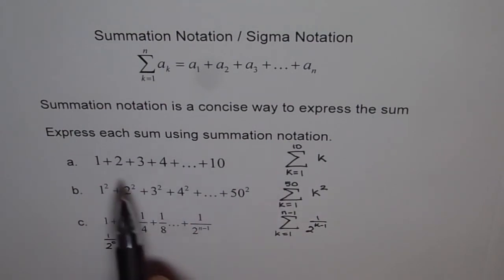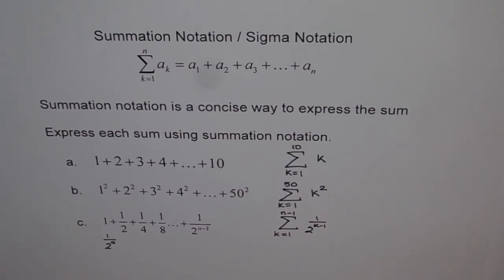It will help us to write in a very concise way, right? And basically, these are our general terms, where it varies from case to case. Here, it was varying from 1 to 50. Here, it was varying from 1 to 10. And here, from 1 to n minus 1.